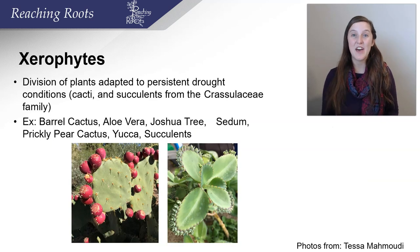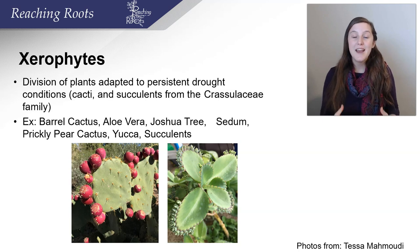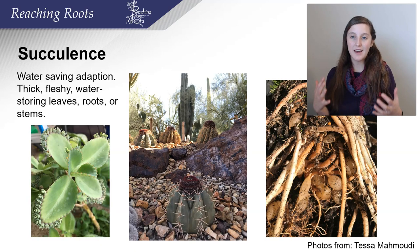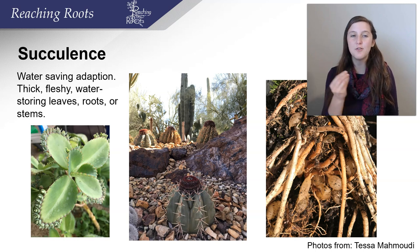Xerophytes, on the other hand, can deal with having very little water — I remember it as zero water. Of course they can't live with zero water, but they can handle very drought-stressed conditions. Some examples are cactus, aloe vera, Joshua tree, sedum, many different succulent plants, and yucca. The name succulents refers to a water-saving adaptation that these drought-tolerant plants sometimes have — seen as thick, fleshy water-storing leaves, roots, and stems.